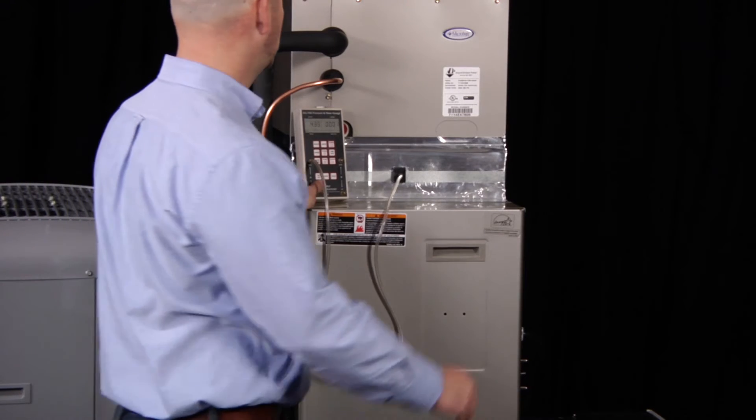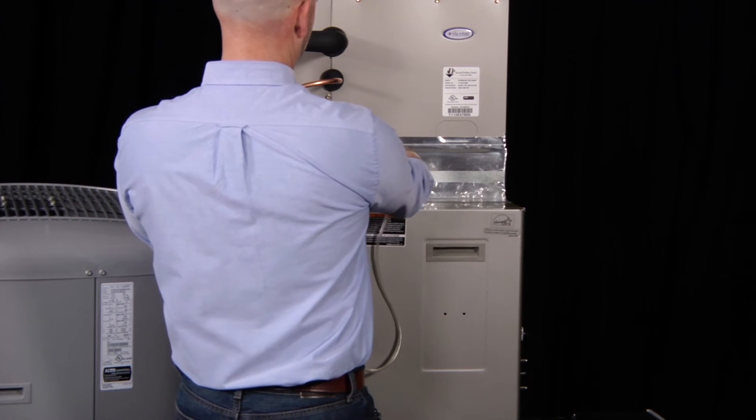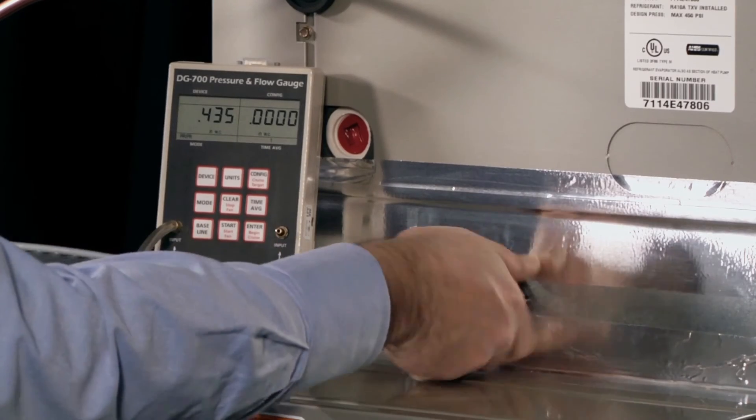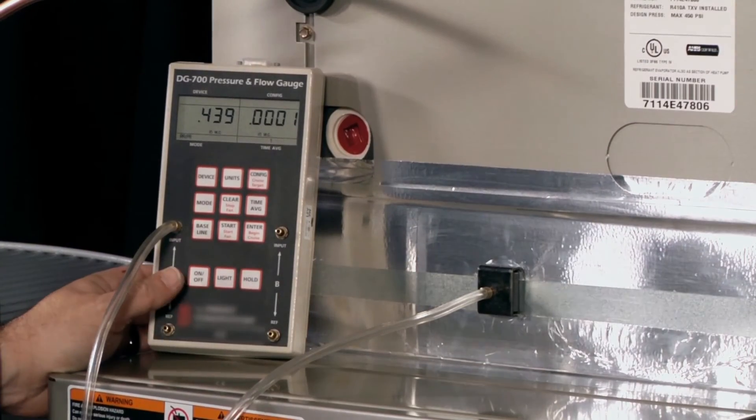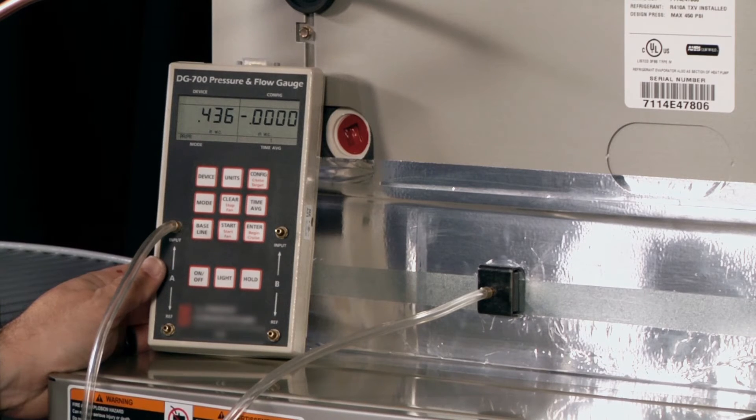Now, what happens if he rotates the static pressure probe 180 degrees so that it's facing the opposite direction? You can see that the static pressure is changing by a little bit, but not very much. In other words, the measurement is not affected very much at all by how the probe is positioned. So that's good news.